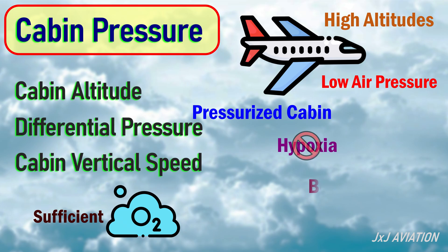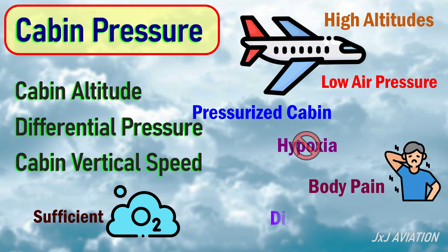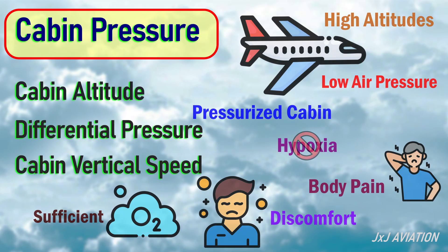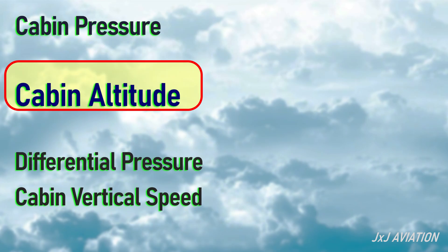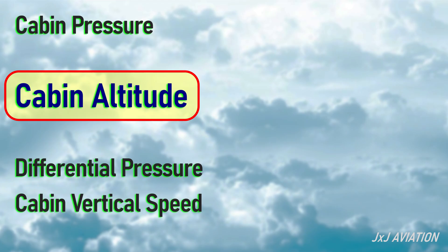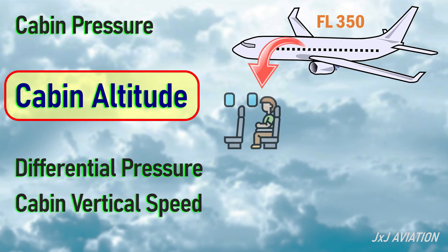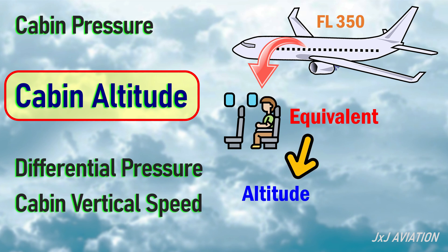Low air pressure can also cause body pain and discomfort to the people on board. Now, let's look at cabin altitude. The pressure maintained in the cabin will be equivalent to the air pressure at a particular altitude — this is called cabin altitude. Normally, the cabin altitude is between 6,000 feet to 8,000 feet.